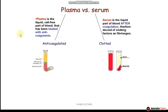Here we have a schematic representing plasma versus serum. For plasma, it is the liquid portion which is cell-free and treated with an anticoagulant, so plasma still has clotting factors present. For serum, there is no addition of an anticoagulant, so the clotting factors are used to clot the blood, and the liquid portion that remains is serum, which is devoid of clotting factors.